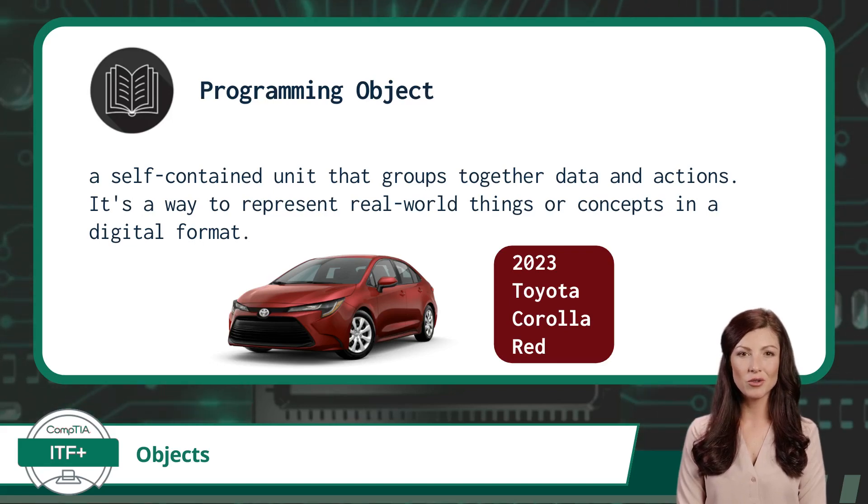Additionally, the car object would have methods that enable actions such as checking its availability, calculating loan payments, and scheduling delivery.